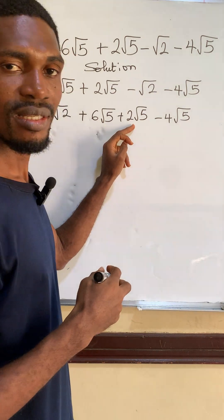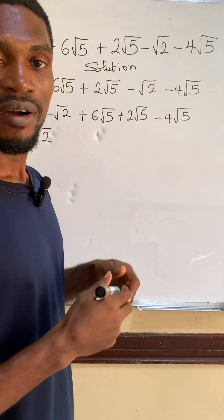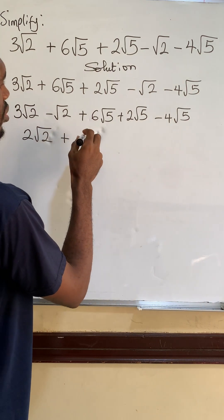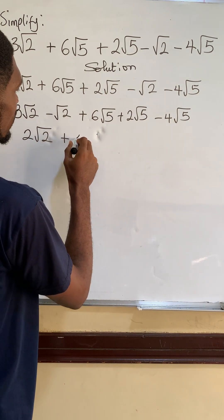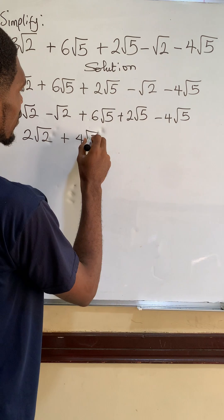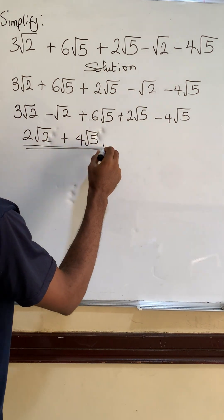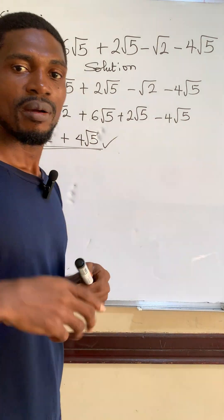And 8 minus 4 is 4, so we have plus 4 root 5. So this is actually the final answer: 2 root 2 plus 4 root 5. Bye!